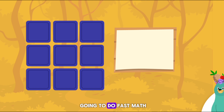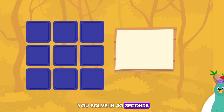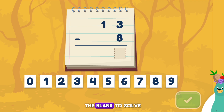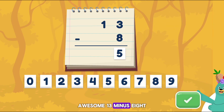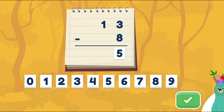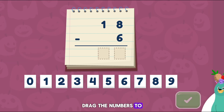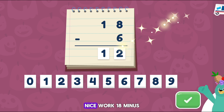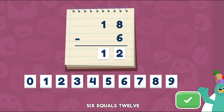Happy Halloween! Today we're going to do fast math. How many subtractions can you solve in 40 seconds? Before we begin, let's do some warm-ups. Drag the number to the blank to solve the equation. Awesome! 13 minus 8 equals 5. Let's do another one. Drag the numbers to the dotted rectangles to solve the equation. Nice work! 18 minus 6 equals 12.